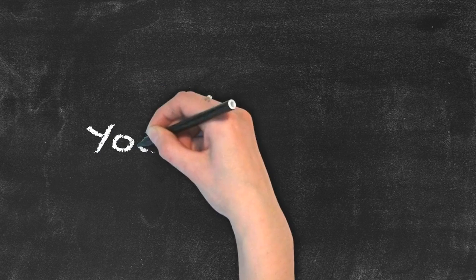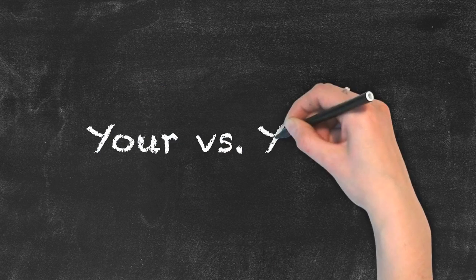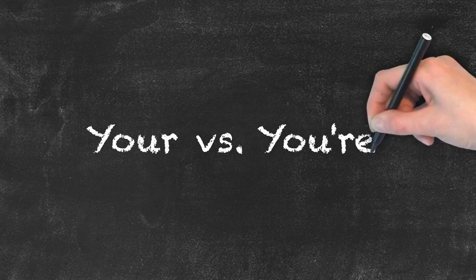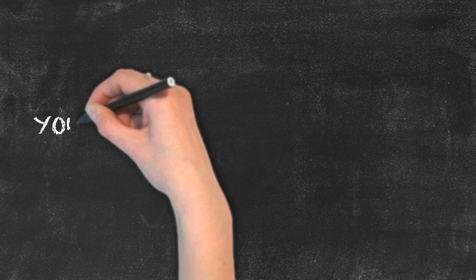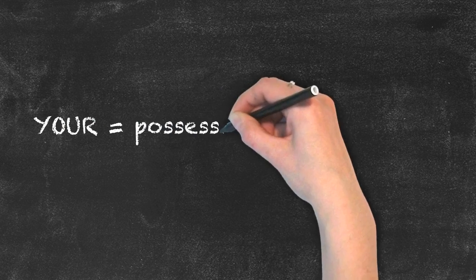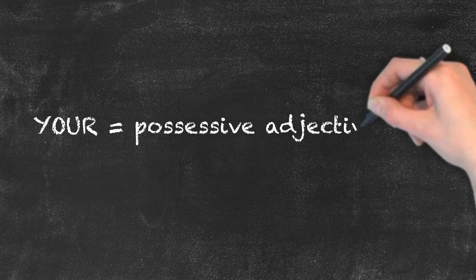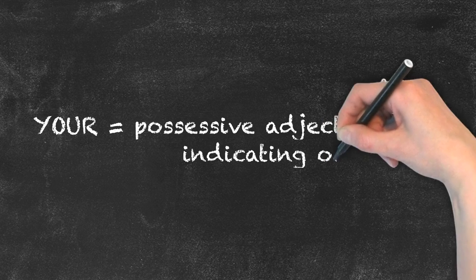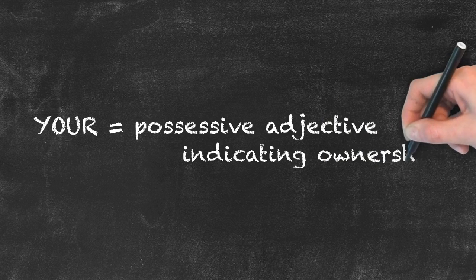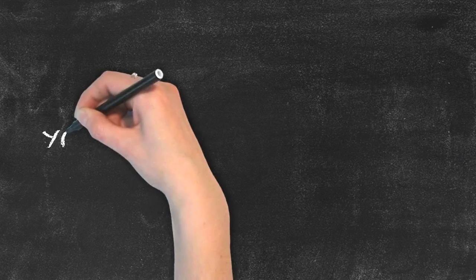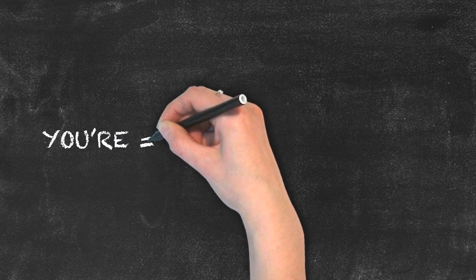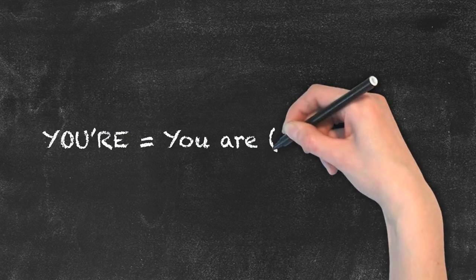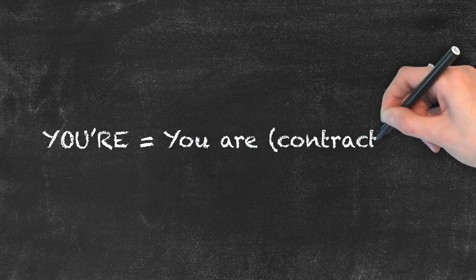Your and you're often get confused in the English language. Let's break it down. Your is a possessive adjective and indicates ownership. You're is simply the contracted form of you are.